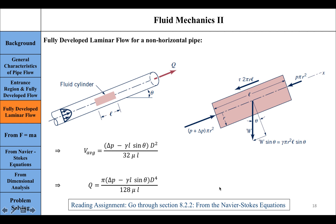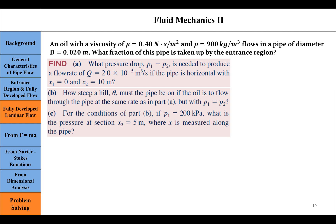Now let's look at this problem. You have oil with a certain viscosity and density, flowing in a constant diameter pipe. Part (a): What pressure drop is needed to produce a given flow rate? The flow rate is given and the pipe is horizontal.